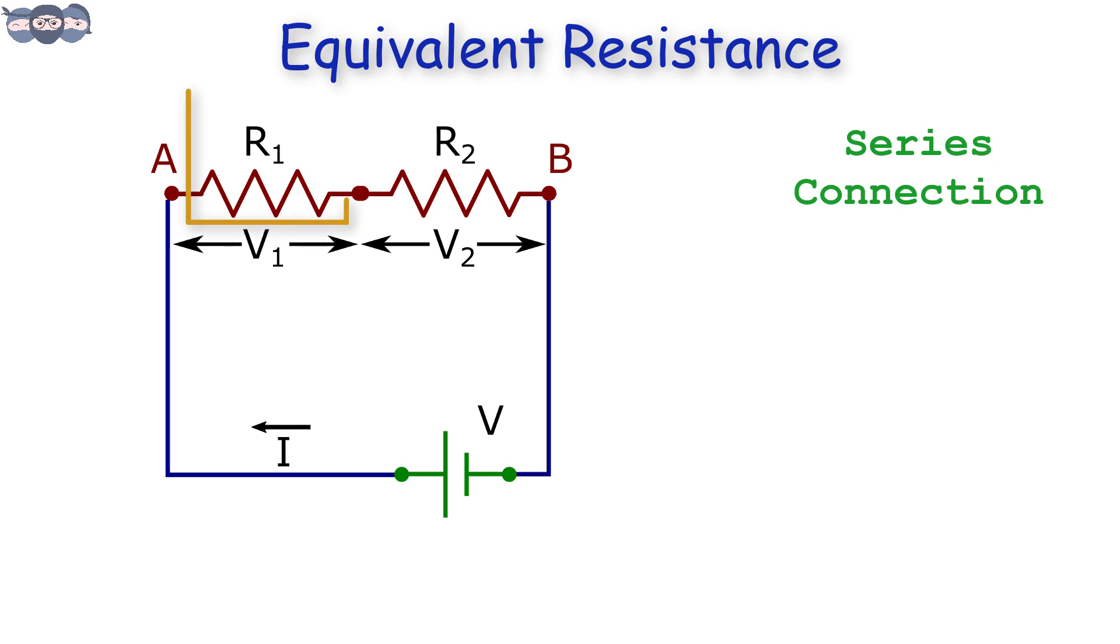If the resistance values are R1 and R2, then by Ohm's law, the voltage across R1 and R2 will be V1 equals IR1 and V2 equals IR2. The total voltage applied will be V equals V1 plus V2.